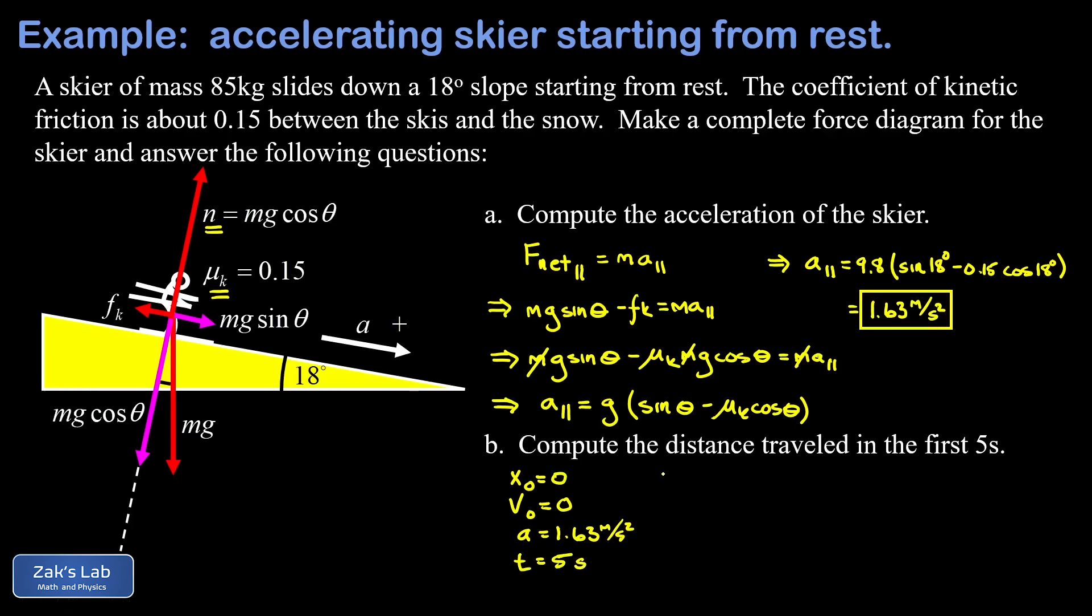We bring up our basic constant acceleration kinematics formula describing the position as a function of time. That's x-naught plus v-naught t plus one-half at squared. We're solving for the final position. Now x-naught is zero, v-naught is zero, and I get this simple expression of one-half at squared. We're going to plug in the numbers, 1.63 for the acceleration and five for the time. When I run the numbers to three significant digits, I get 20.4 meters.